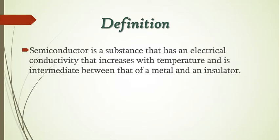First, we are going to see what is the definition of a semiconductor. A semiconductor is a substance whose electrical conductivity increases with increase in temperature, and its electrical conductivity is intermediate between that of a metal and an insulator.